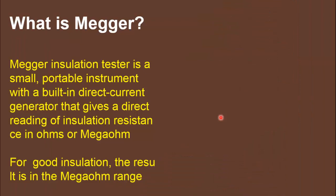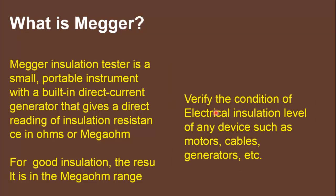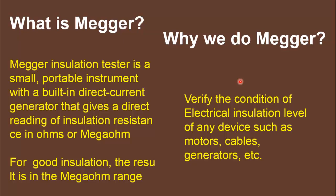First, I will explain what a Megger test is and why we perform it. The Megger test is performed by an instrument called the Megger insulation tester — a small device with a built-in DC generator that provides DC voltage to the equipment. It measures the leakage current internally and, using Ohm's law, displays the resistance value, allowing you to assess the insulation level. We perform the Megger test to verify the condition of electrical insulation on different machines or cables such as motors and generators.